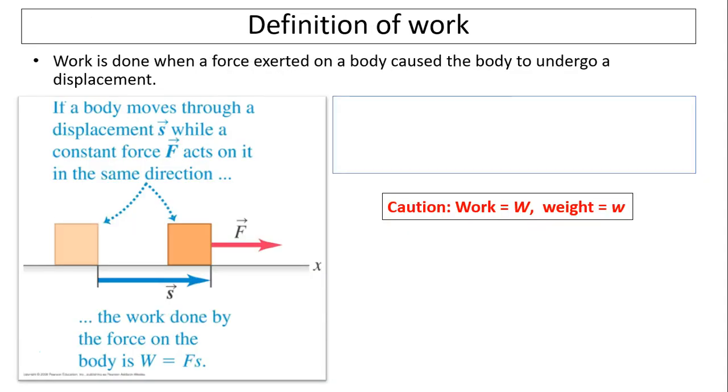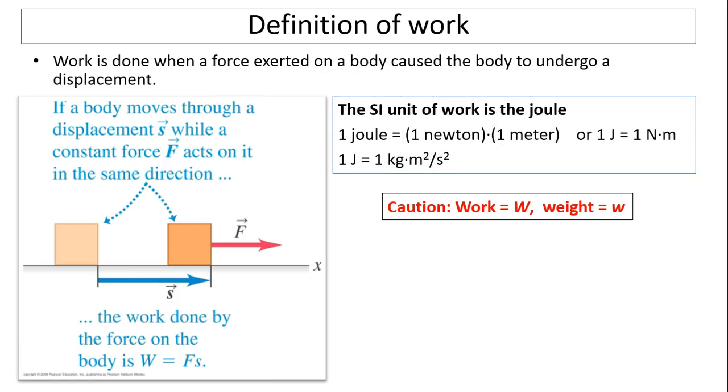Definition of work: Work is done when a force exerted on a body causes the body to undergo a displacement. The force has to cause the body to make the displacement. If the force doesn't cause the body to undergo the displacement, then that force is not doing the work. If a body moves through a displacement s while a constant force F_x acts on it in the same direction, then the work done by the force is F times s.